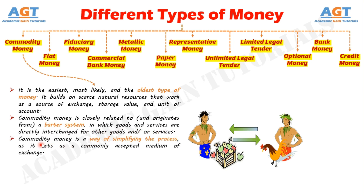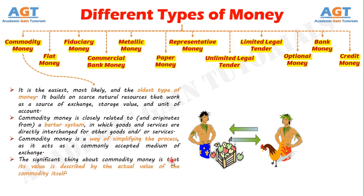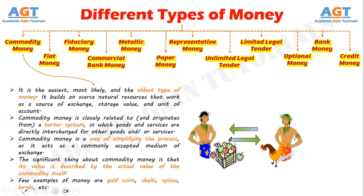Commodity Money is a way of simplifying the process, as it acts as a commonly accepted medium of exchange. The significant thing about Commodity Money is that its value is described by the actual value of the commodity itself. A few examples of commodity money are gold coins, shells, spices, beads, etc.